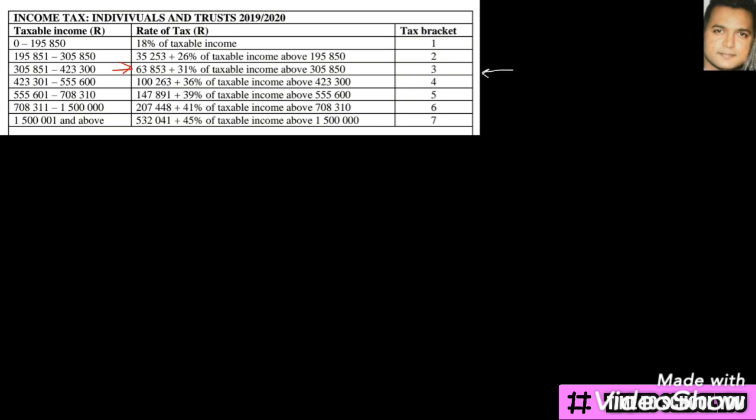So we know we're working from tax bracket three and we will also be working with tax bracket two. Keeping this in mind, let's take those two amounts. Firstly, we always take the amount at the extreme, the one that says above 305,850.